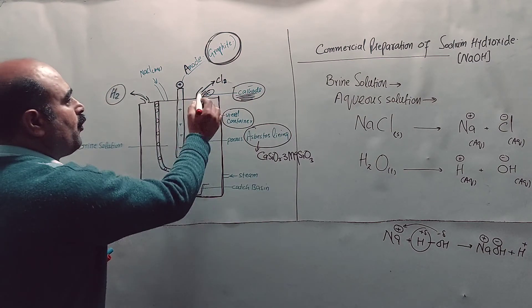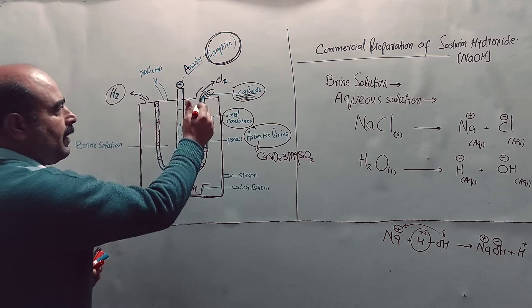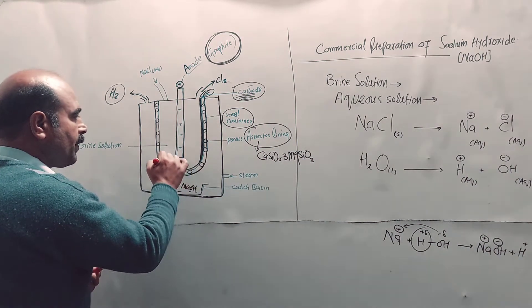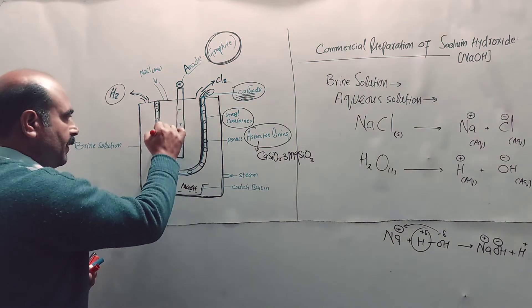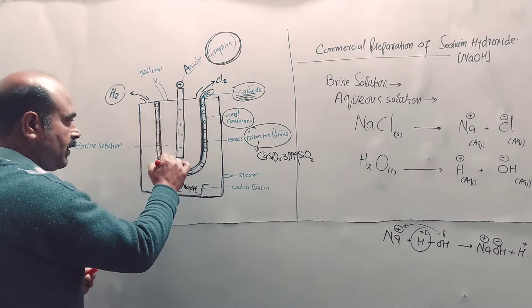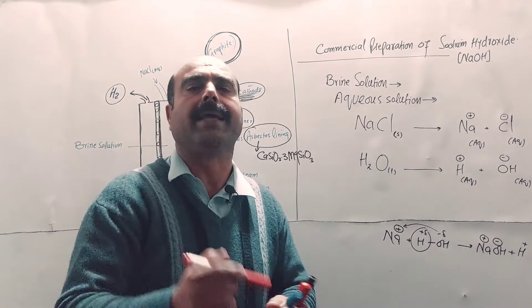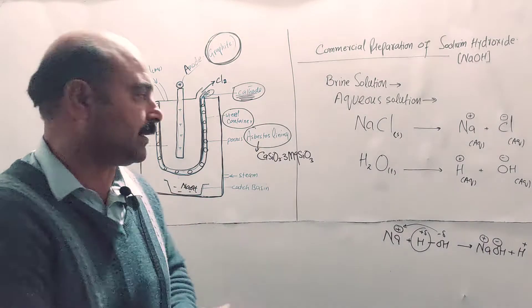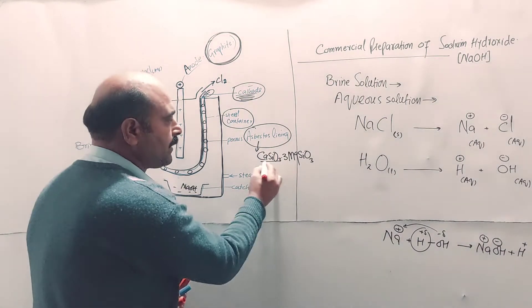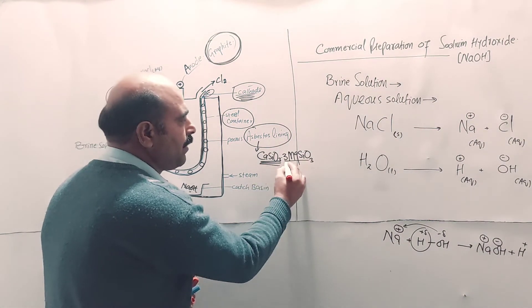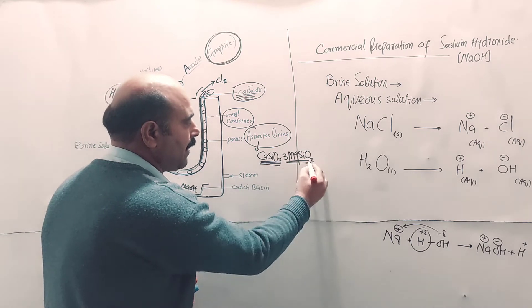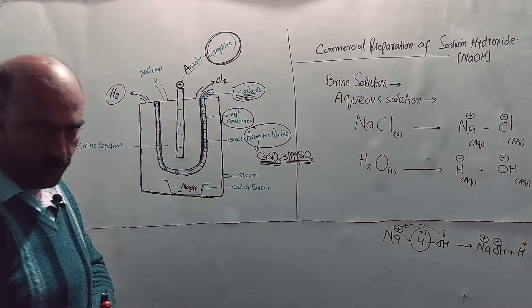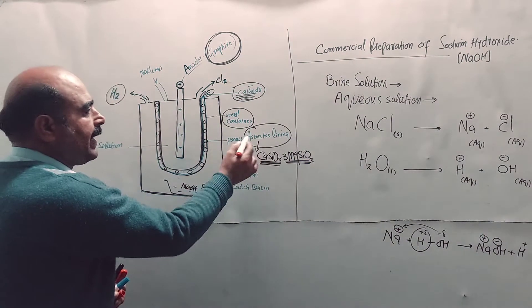There is an outlet above the cathode for gas collection. The cathode's inner side has a lining or coating made of asbestos. What is asbestos? Mixed silicates of calcium and magnesium. One mole of calcium silicate (CaSiO3) to three moles of magnesium silicate (MgSiO3). This is asbestos forming the internal lining.